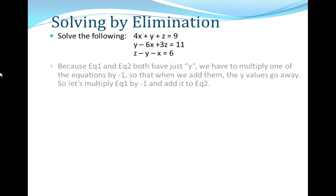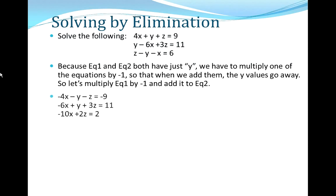So I've just restated the question at the top there. Okay, so because Eq1 and Eq2 both have just 'y', we have to multiply one of the equations by negative one so that when we add them, the y values go away. So let's multiply Eq1 by -1 and add it to Eq2.